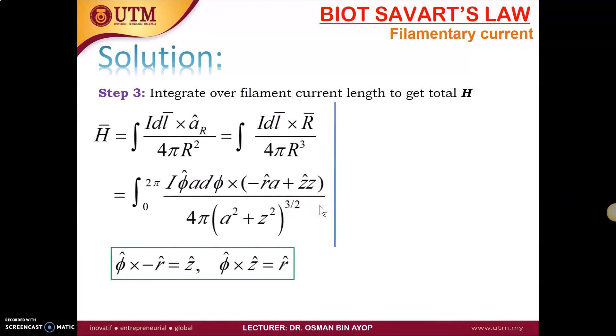So here is the rule where phi, we got phi cross negative R and phi cross Z. So phi cross negative R is equal to Z by using the loop that I'm showing you before. And phi cross Z equals R.